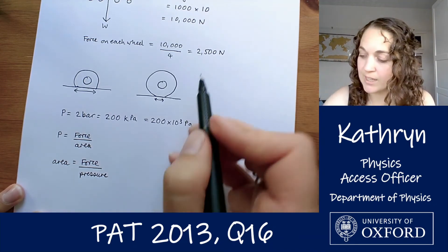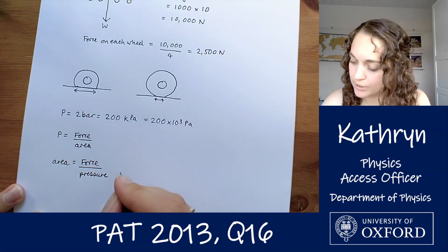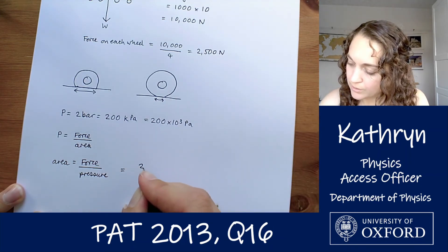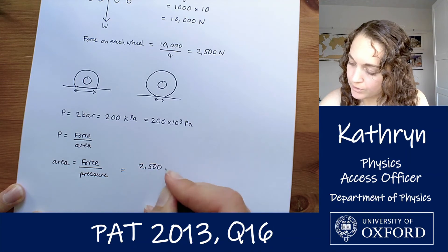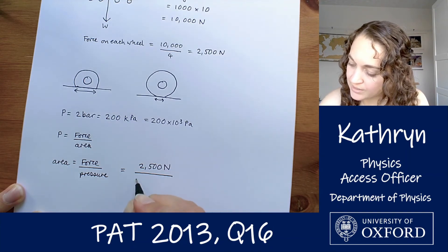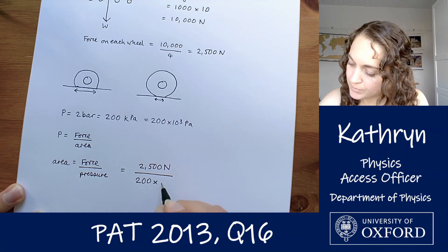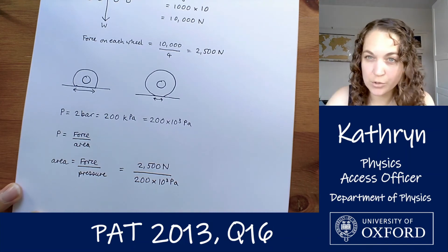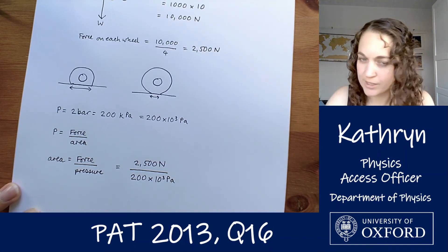Now, the force on one wheel we already calculated, 2,500 newtons. And the pressure we said is 200 times 10 to the 3 pascals, making sure that we're using right units here.